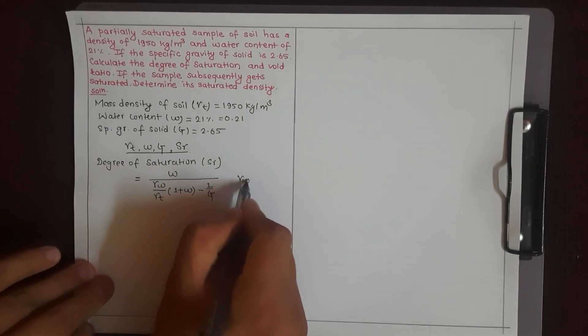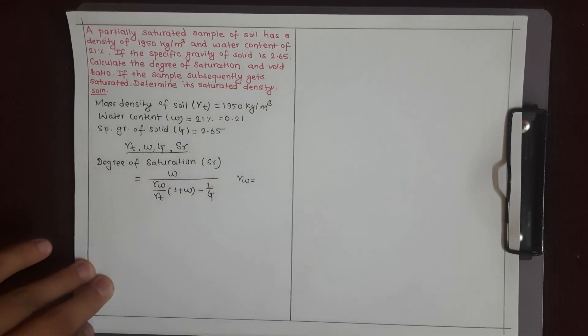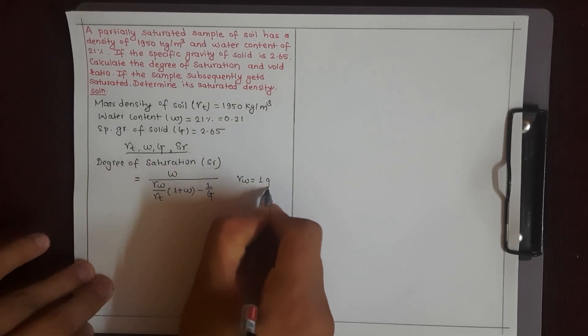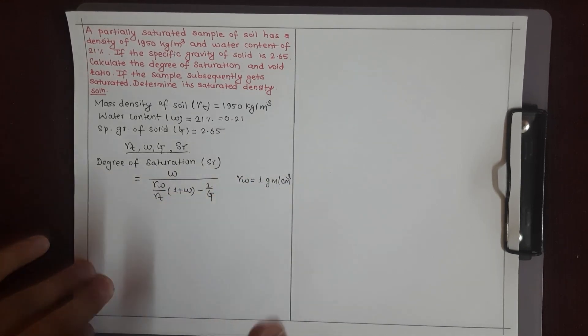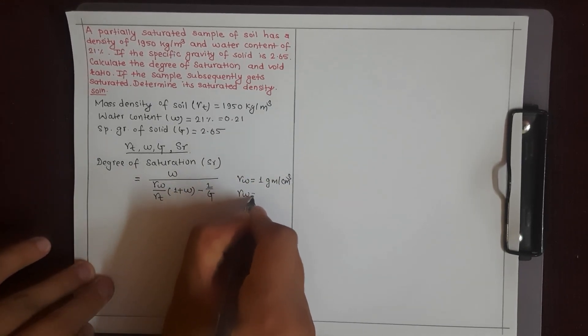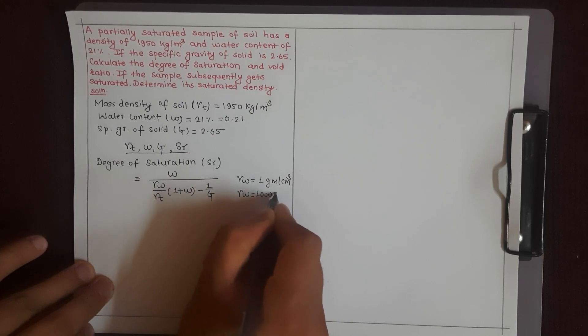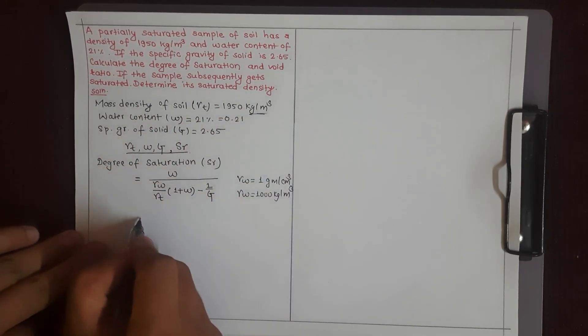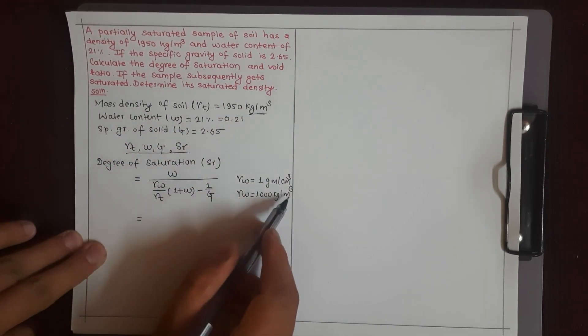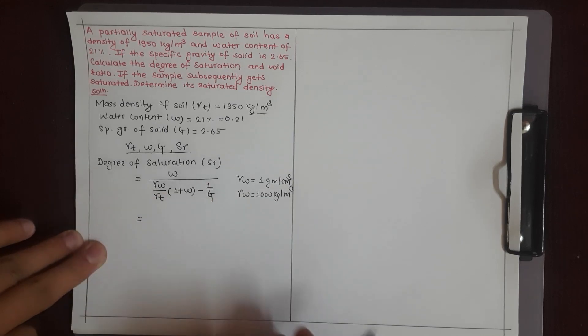The unit weight of water, gamma w, equals 1 gram per cubic centimeter, which converts to 1000 kg per meter cubed.